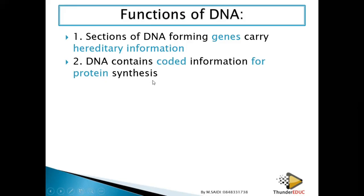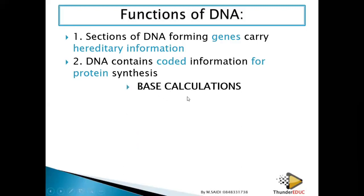DNA also consists of coded information for protein synthesis. Most of our body is made up of proteins — hormones, enzymes — which bring about normal body functioning. It is DNA which codes for those proteins. We will look at protein synthesis in coming lessons. DNA also has complementary base pairs, so let's look at base pair calculations, which many exam papers ask about.